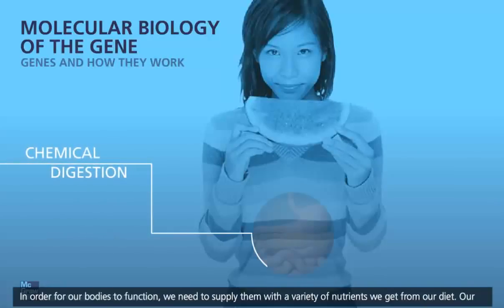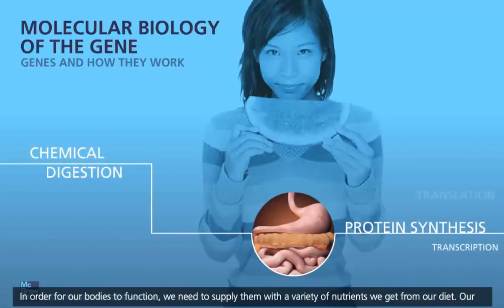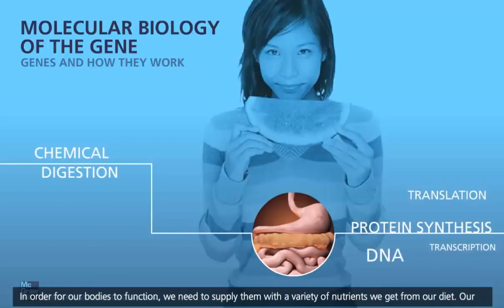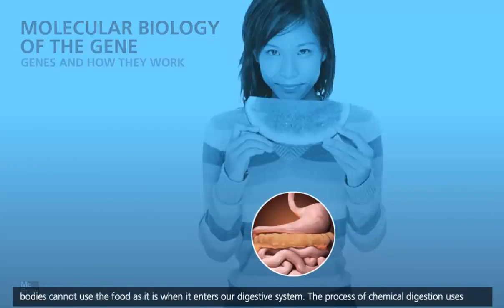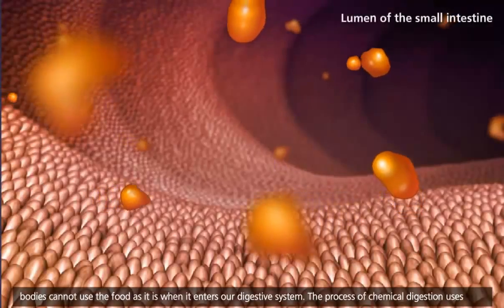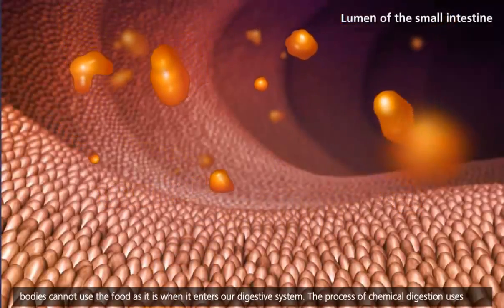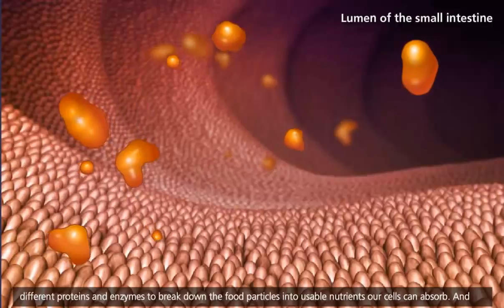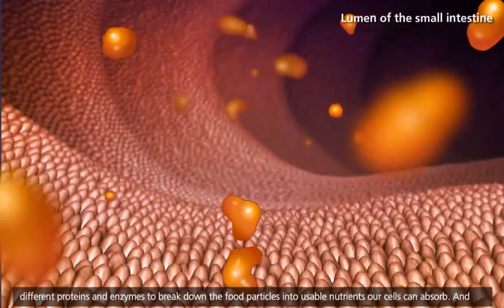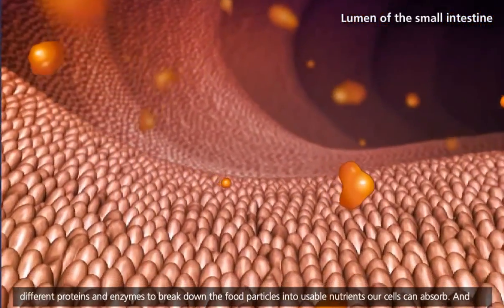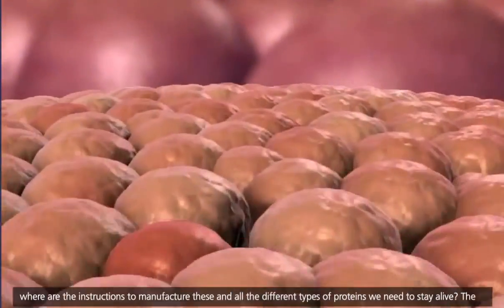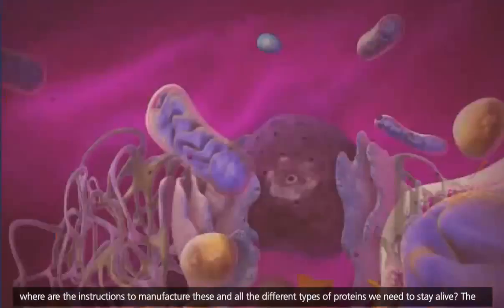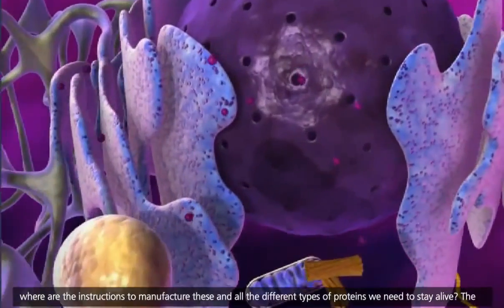In order for our bodies to function, we need to supply them with a variety of nutrients we get from our diet. Our bodies cannot use the food as it is when it enters our digestive system. The process of chemical digestion uses different proteins and enzymes to break down the food particles into usable nutrients our cells can absorb. And where are the instructions to manufacture these and all the different types of proteins we need to stay alive?